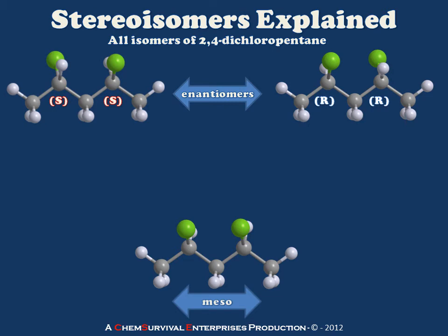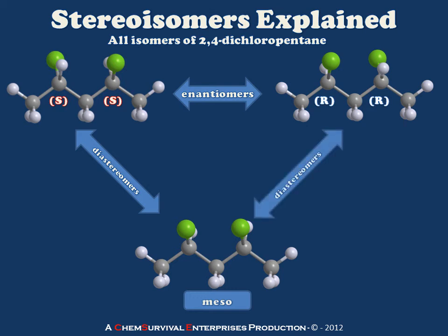Recall that stereoisomerism is a relationship between two compounds. So we can compare, for example, the SS version of our compound to our meso compound. When we do this, we discover that we have diastereomers — non-superimposable but not mirror images of one another. We obtain a similar relationship when we compare the RR version to the meso compound. So these names — enantiomers, diastereomers — are relationships between two molecules. It's not correct to say the SS version is simply 'an enantiomer'; it is only correct to say it is an enantiomer of the RR version.